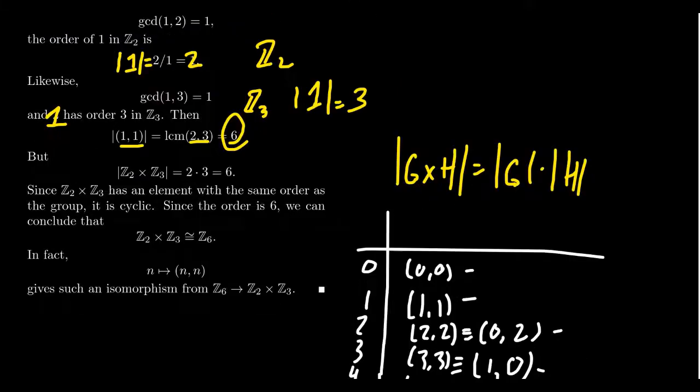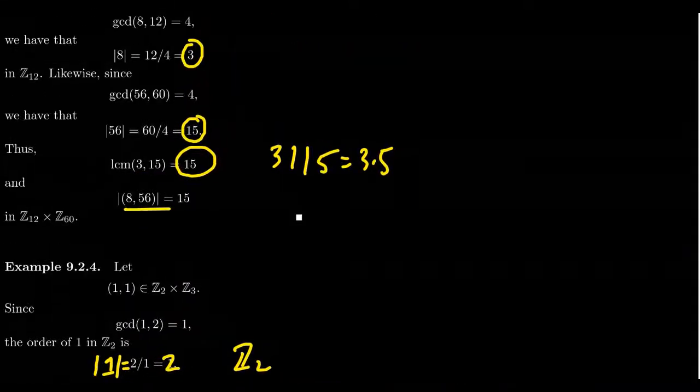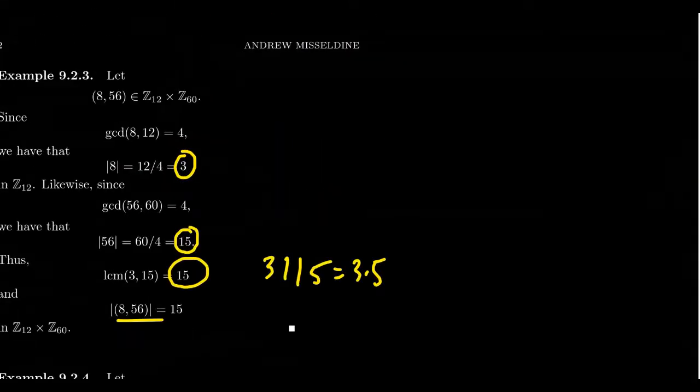That's not always the case, though. So one can, in fact, argue that Z₁₂ cross Z₆₀ is not a cyclic group. And that's what will lead us to the Chinese remainder theorem in the very next video. Thank you.